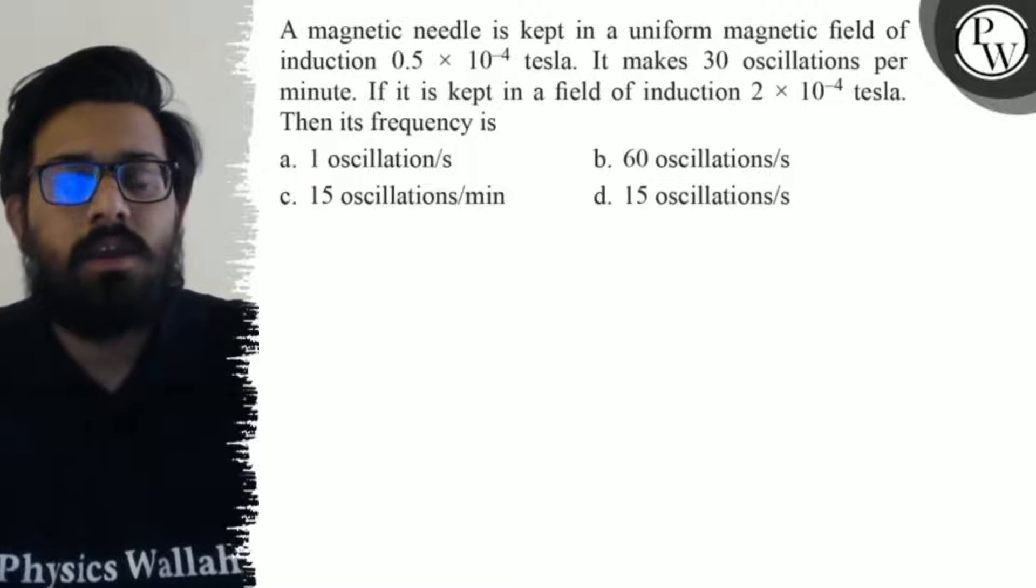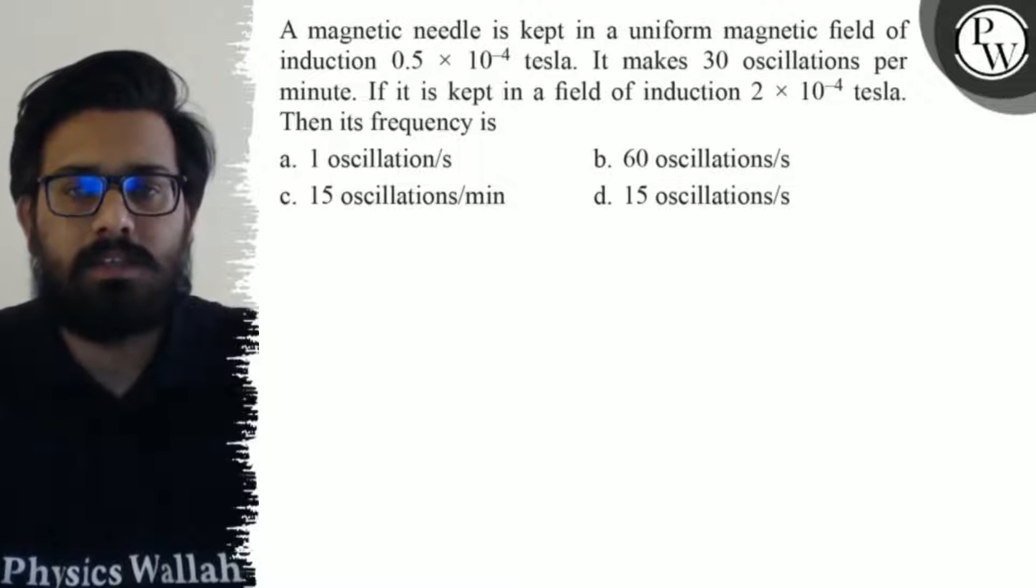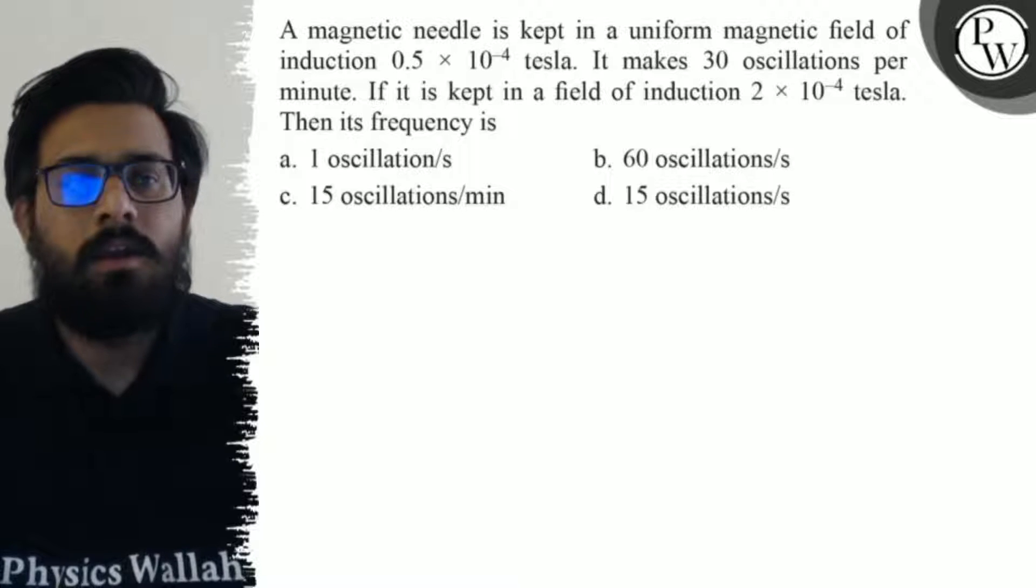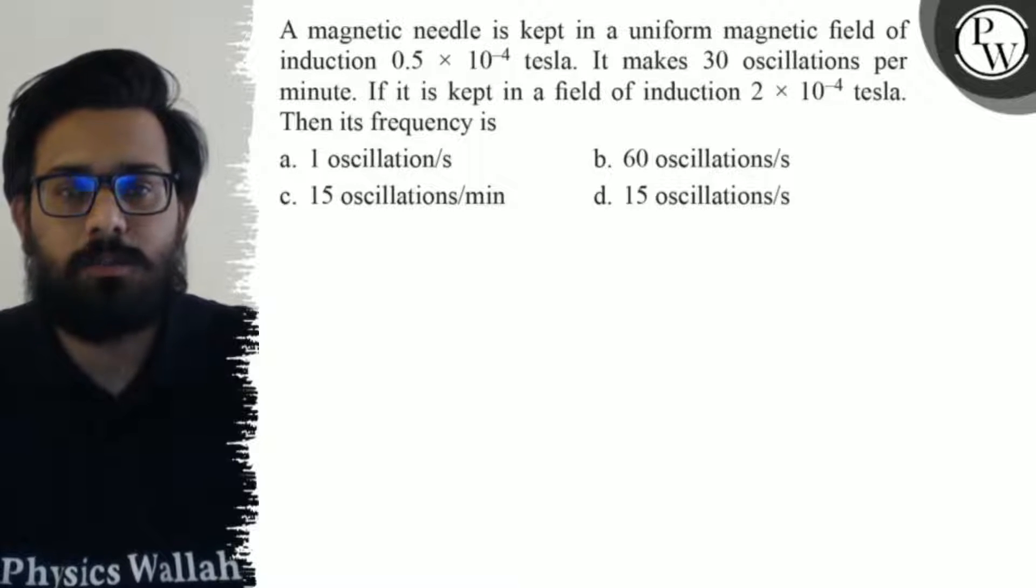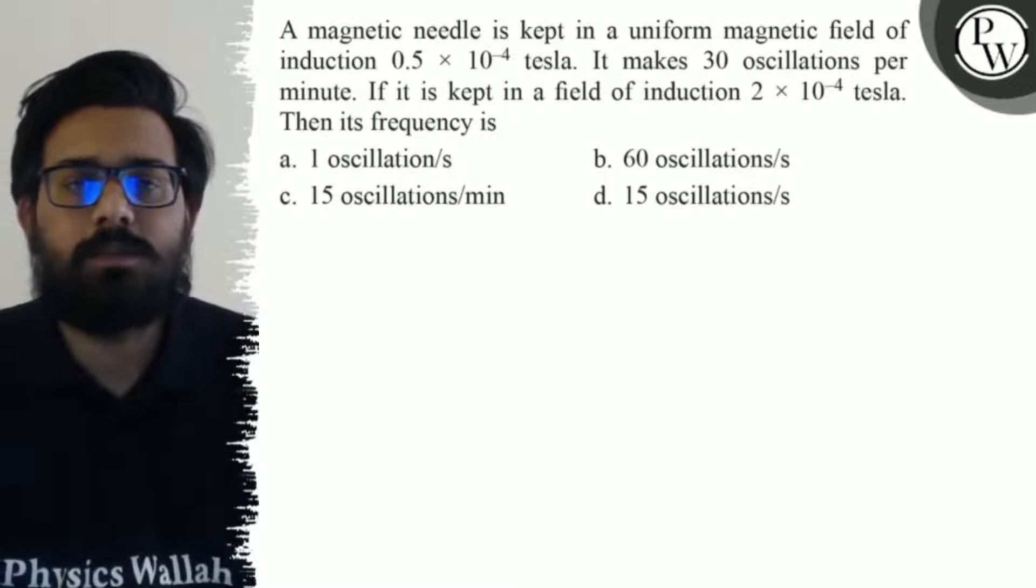The first option is 1 oscillation per second, second option is 60 oscillations per second, third option is 15 oscillations per minute, and the fourth option is 15 oscillations per second.